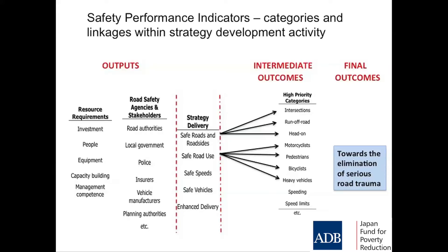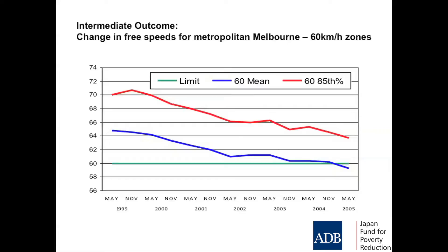If vulnerable road users are the biggest issue — and they are, in every country here — what are the things that cause problems for pedestrians? Speed is the big killer of pedestrians. What about a performance indicator where you say to every local government: in each city we want you to measure changes in mean speed over the next 12 months, and we'd like to see you get that down to no more than 30 kilometres an hour in urban areas. That would be a really important way of getting your pedestrian deaths down, and it would also get down your motorcycle deaths.